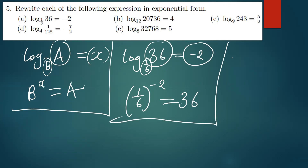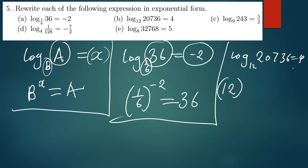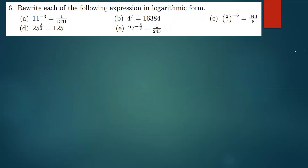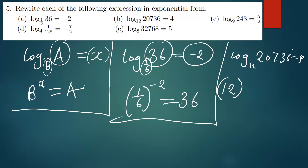The next one — converting to exponential — is also simple. We have log of 2736 being equal to 4 with base 12. Remember, the base will still remain the base, and the power is whatever you have on the right. So base 12 to the power 4 equals 2736.